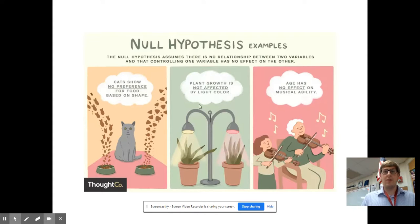Plant growth is not affected by light color. They've changed the light color and they're measuring the plant growth. And then age has no effect on musical ability. They're changing the age of the subject and they're measuring their musical ability. To review, the thing you change directly, the light, the shape of the food, the age, that is the independent variable. And then the dependent variable is going to be the one that is measured in the experiment, the one that you look at over the course of the experiment.